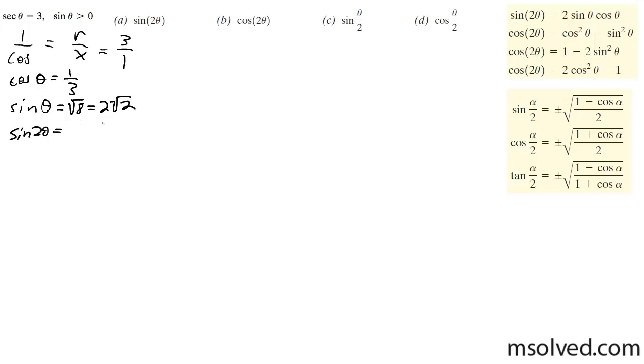So sine of 2 theta is going to be equal to 2 times 1 third times 2 root 2 over 3, which ends up being 4 root 2 over 9.